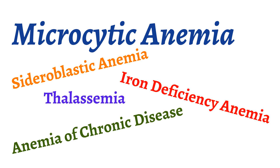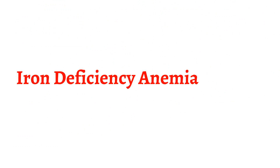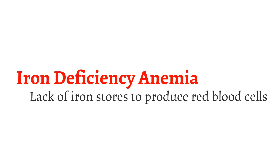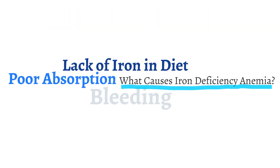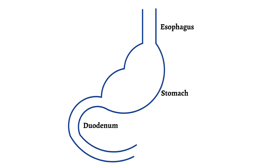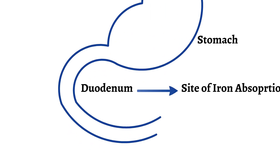Iron deficiency anemia is when the body does not have enough iron to produce red blood cells. The body becomes deficient in iron due to a lack of iron in the diet, poor absorption, or bleeding. To understand iron deficiency anemia, we need to understand how iron is absorbed and regulated in the body. Iron enters through our diet and is absorbed in the small intestine, specifically in the duodenum.